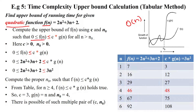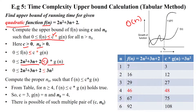The Big O of n has the criteria: 0 ≤ f(n) ≤ c·g(n), where c is a constant. The constant and the initial input size n₀ should always be greater than 0. We are substituting the value into 2n² + 3n + 2 as f(n), and c·g(n) is always greater than f(n).